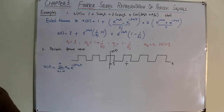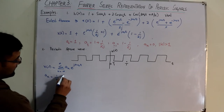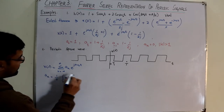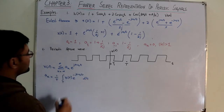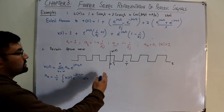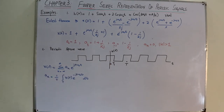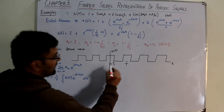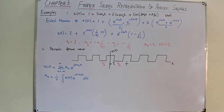For the synthesis equation, x(t) = Σ aₖ e^(jkω₀t) — there's no negative sign. Since the signal is symmetrical, we prefer to integrate from -T/2 to +T/2, though any interval covering one period works.